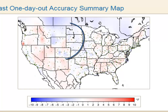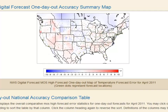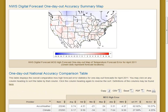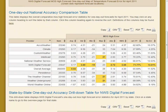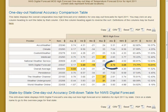Blue areas are areas of under-prediction of high temperature — that is, our forecast was generally lower than the actual high. Red areas are areas of over-prediction, or areas where our high temperature forecast was too high on average. Looking at the summary table for the entire United States, you can see that the NDFD performed well for this measure. Absolute error was 2.72 degrees Fahrenheit, and nearly 72% of forecasts were within 3 degrees.